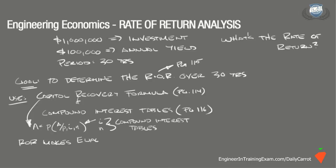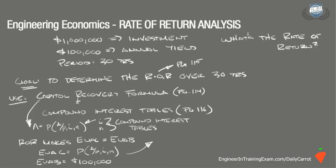Equivalent Uniform Annual Cost equals Equivalent Uniform Annual Benefits. The Equivalent Uniform Annual Cost, or EUAC, of this problem is P times (A/P, i, n), and the EUAB, which is the benefit for this problem, is $100,000. Setting these two values against each other we get $1,000,000 times (A/P, i, n) equals $100,000. So we have (A/P, i, n) equal to 0.10 when we rearrange and solve for that factor, and we also have a period of 30 years.